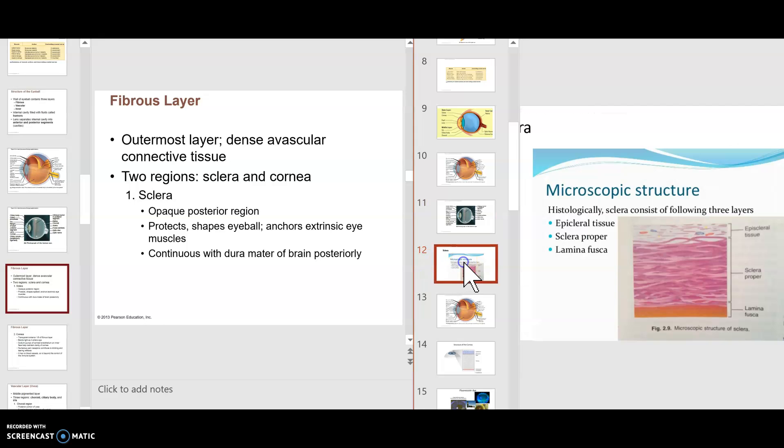And it continues with the dura mater of the brain posteriorly. Here is a look at the microscopic appearance of the sclera, that whitish area. Episcleral tissue, scleral proper, and so forth. So this just shows a micro-histologic look at the sclera. But that's that whitish portion of the eye that the eye muscles attach to. That's at the back.